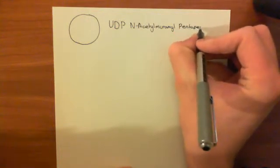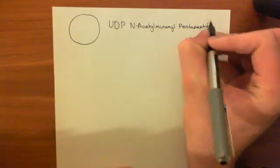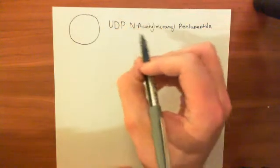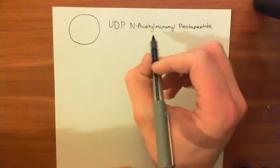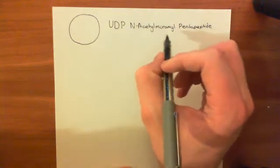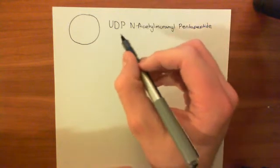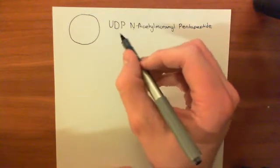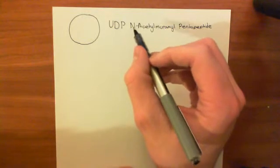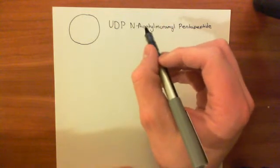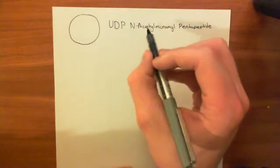This synthesis is happening in the cytoplasm of the cell. We have also seen two antibiotics which work by inhibiting the production of UDP-N-acetyl-muramyl-pentapeptide, namely phosphomycin, which inhibits the pyruvyl transferase — or N-acetylglucosamine-3-enolpyruvate transferase, also called MurA.